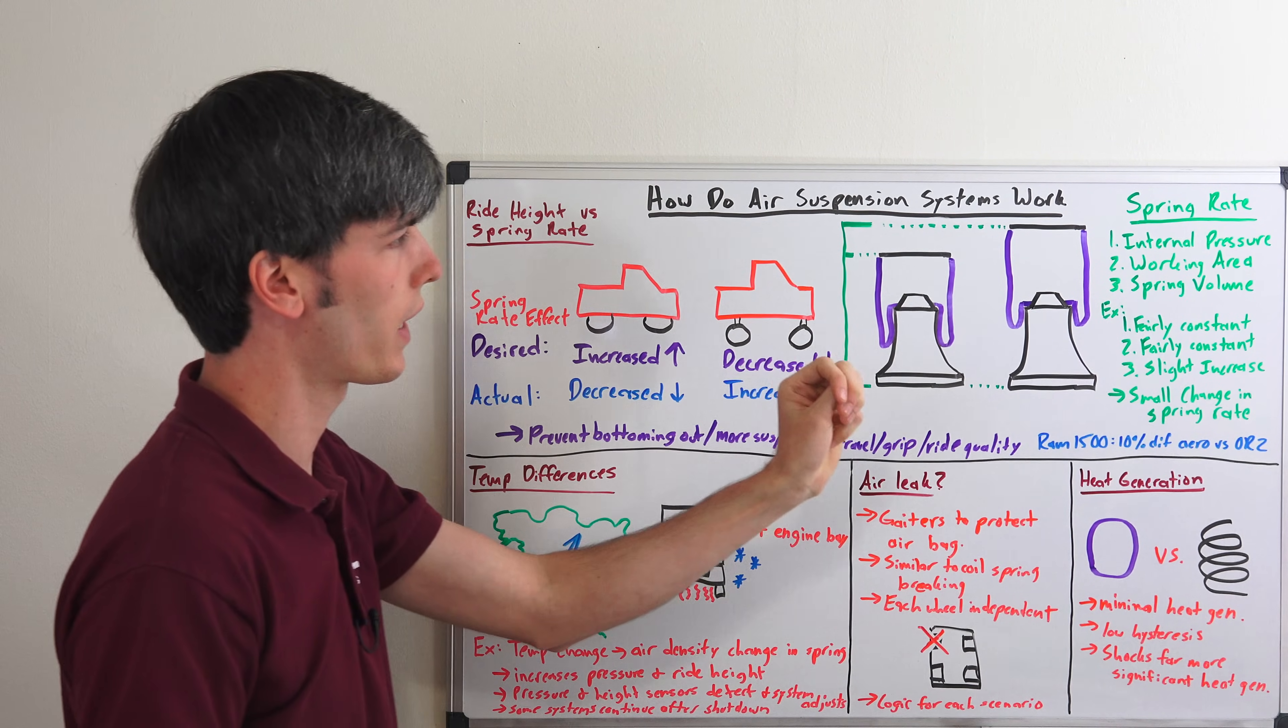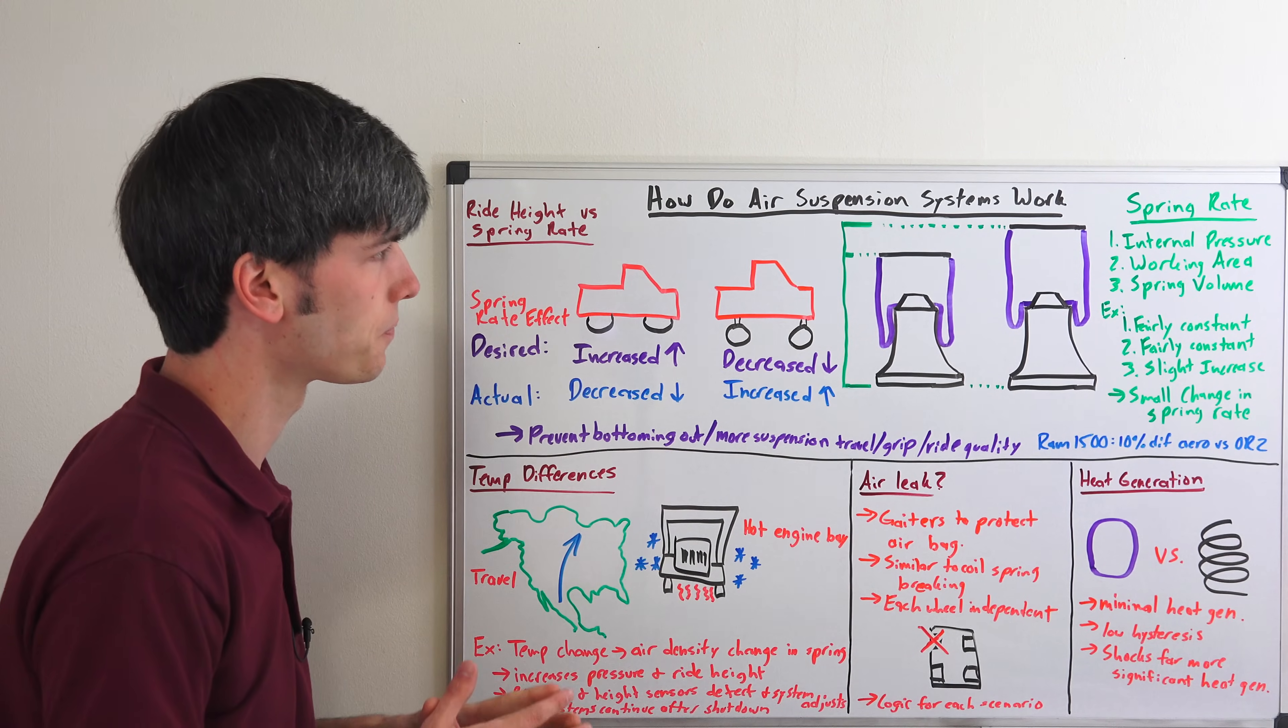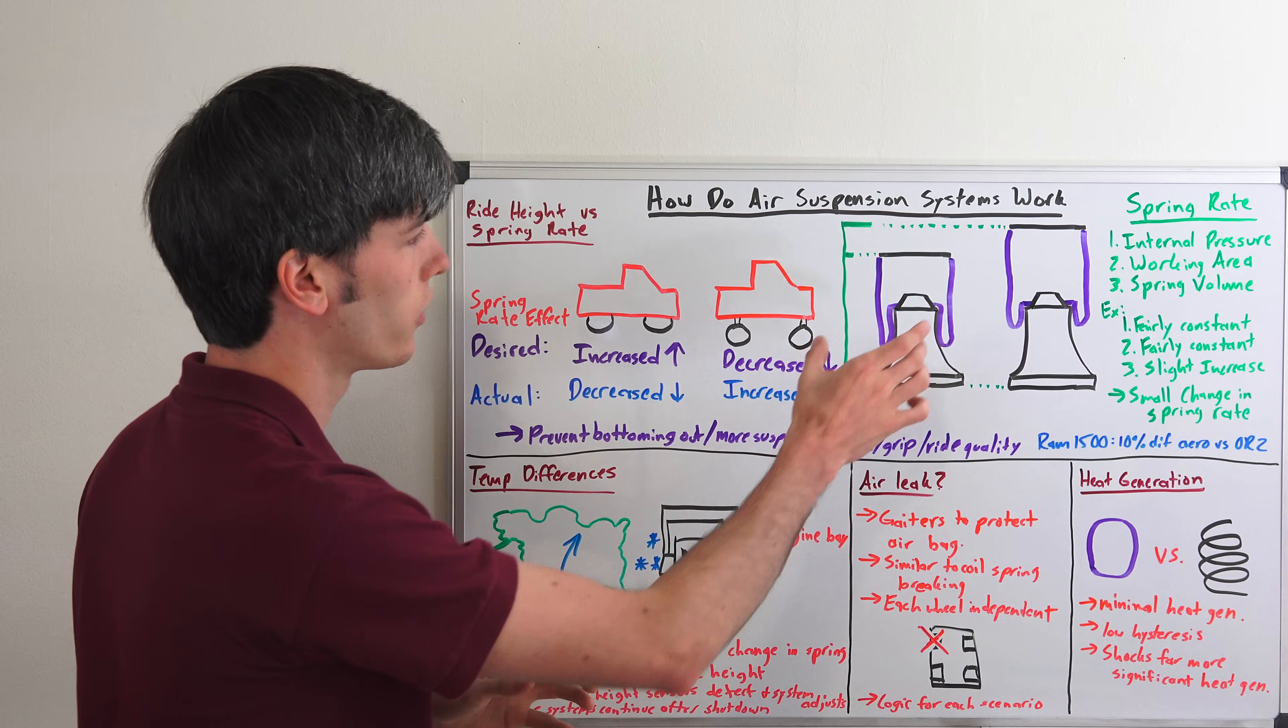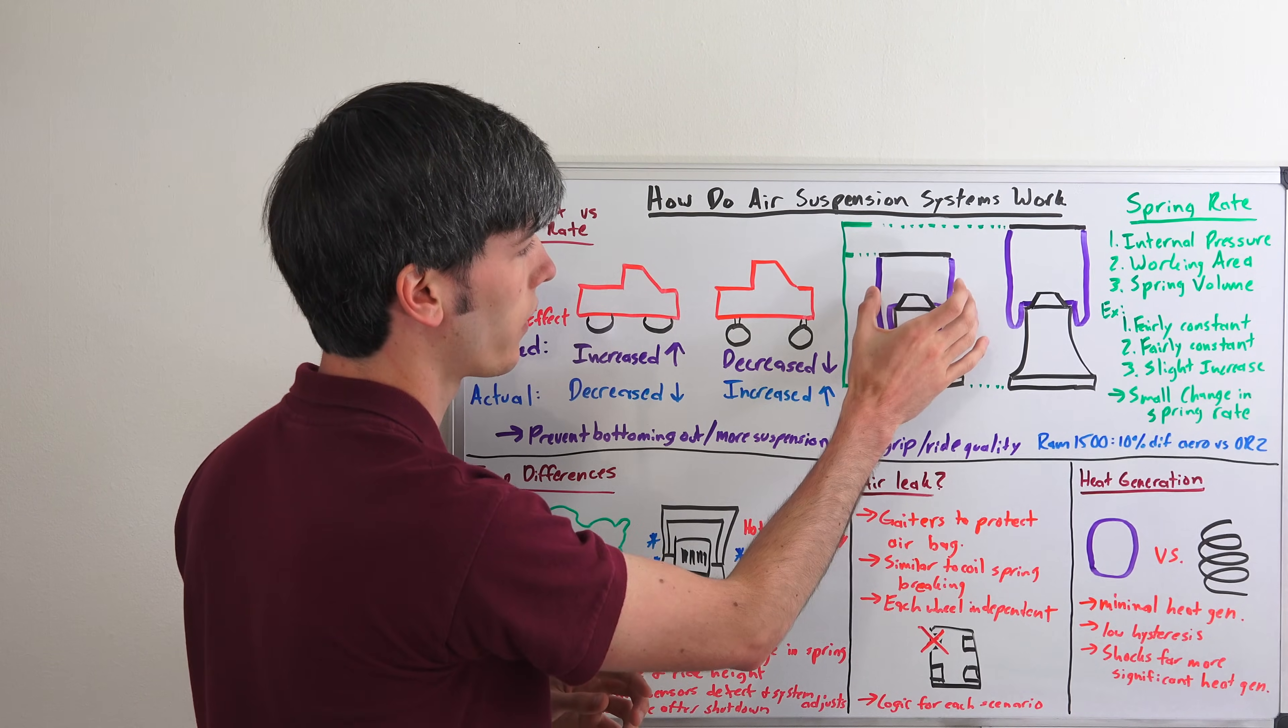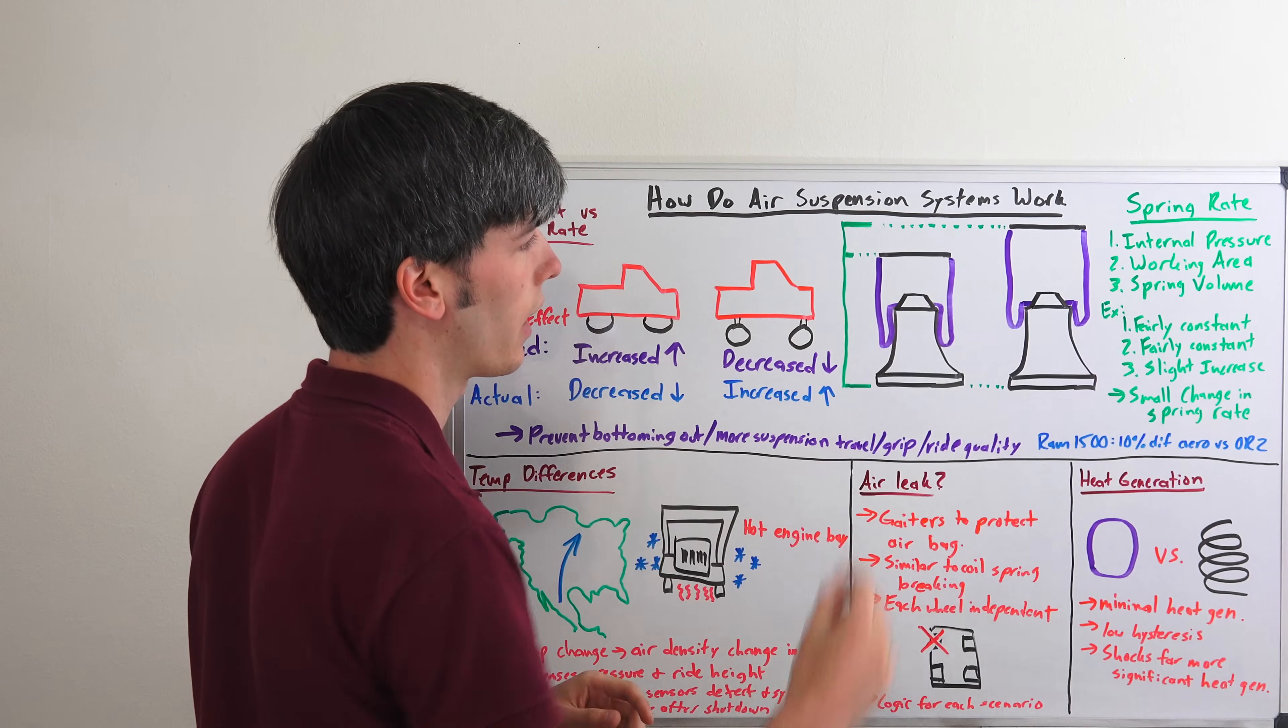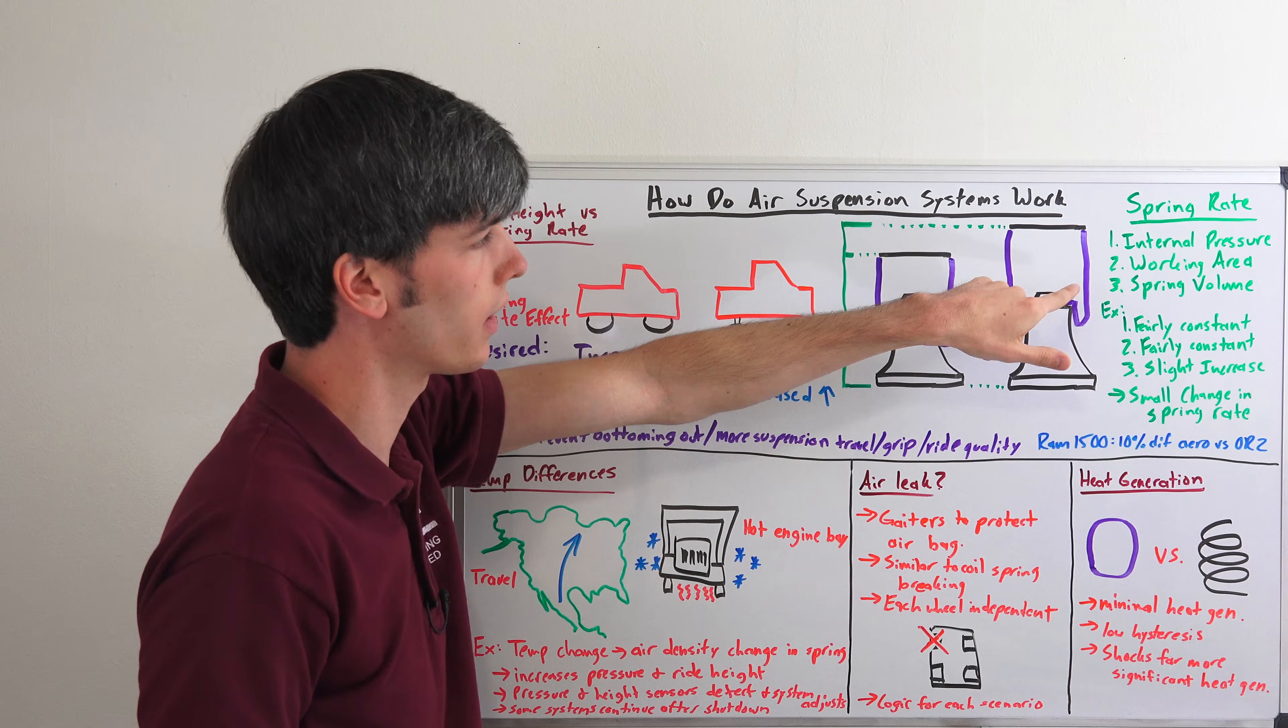Here you can see the rolling lobe type spring. So the spring rate is going to be dependent on three major factors: the internal pressure of the air within the spring, the working area of the spring, and then the spring volume. So here we have a rolling lobe air spring and as you can see here it's at a lower ride height setting, and then as you increase the amount of air in it, you're going to add air mass to that and it's going to raise it up. So then you now have a higher ride height.